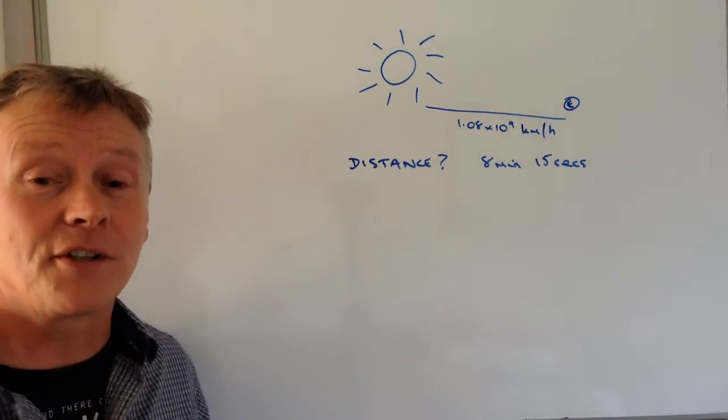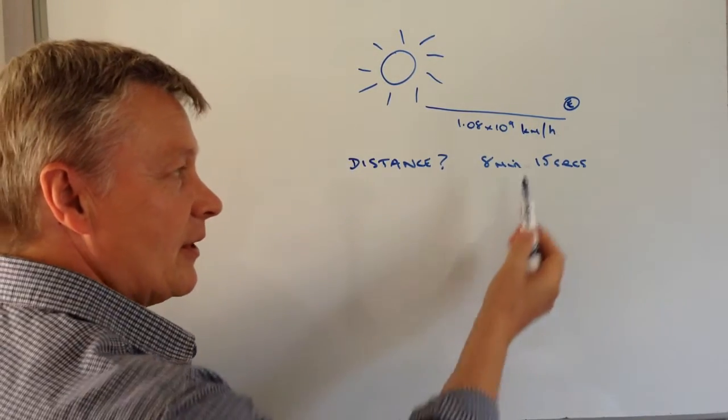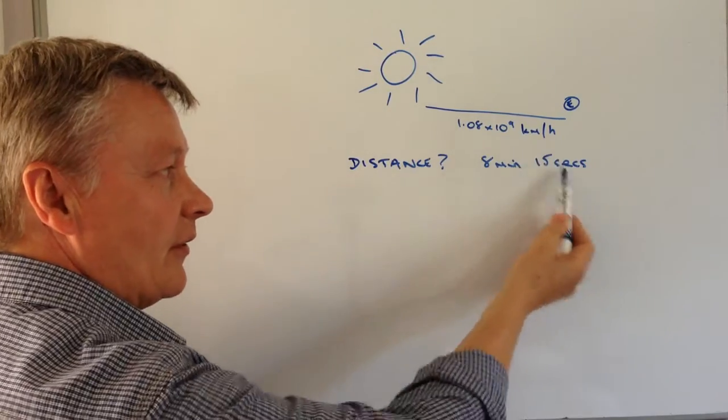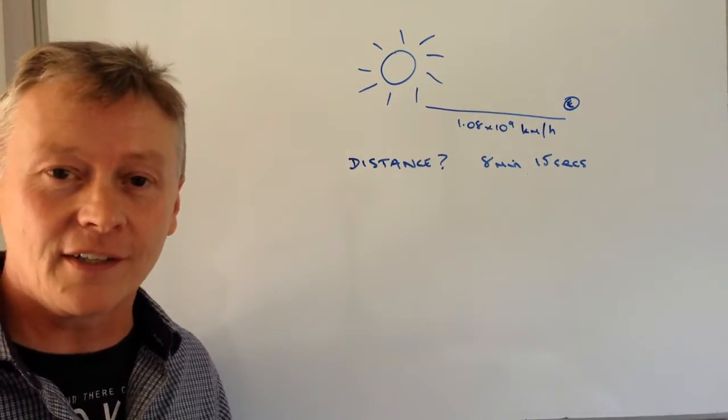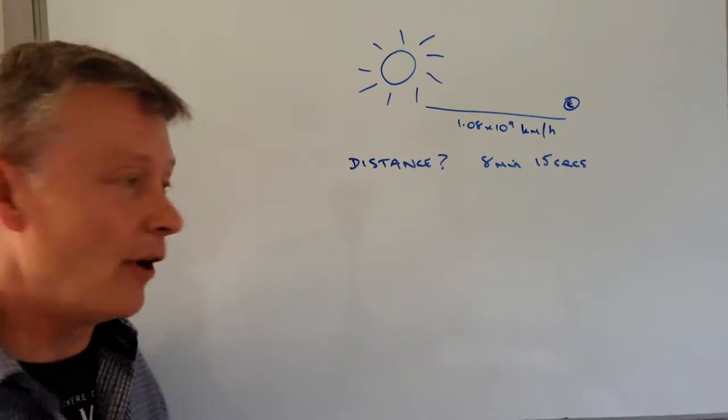They want us to use that information to calculate the distance. The difficulty here is the speed is in hours, but they've given us 8 minutes and 15 seconds, so the first thing we need to do is convert this into parts of an hour.